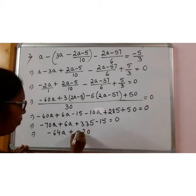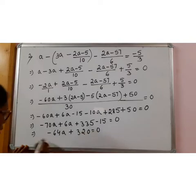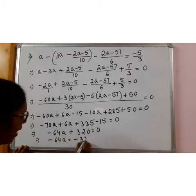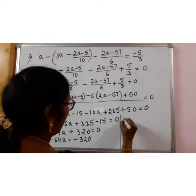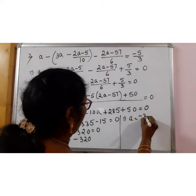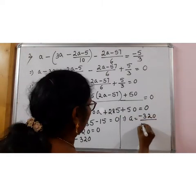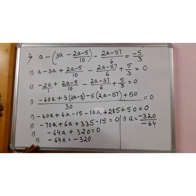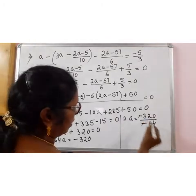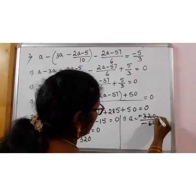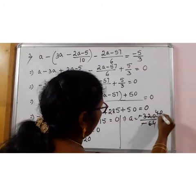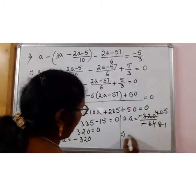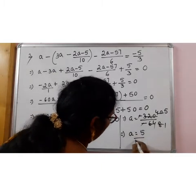Minus 70a plus 6a is minus 64a plus 5 minus 5, 0, 3 minus 1, 2, 3 is equal to 0. Or minus 64a is equal to minus 320. That implies a is equal to minus 320 by minus 64. Or we can cancel minus here. Here also we can cancel. 8 8s are 64, 8 40s are 8 1s are 8 5s are. That implies a is equal to 5.